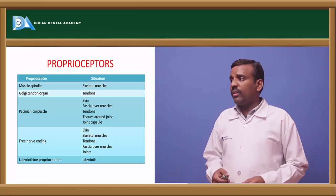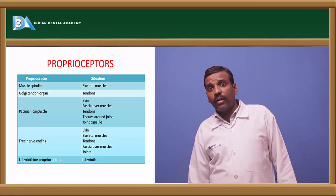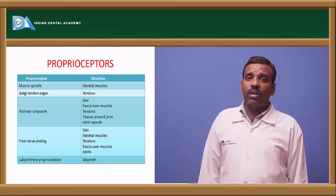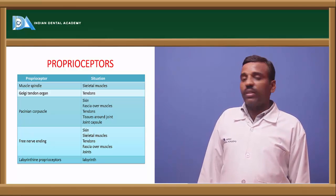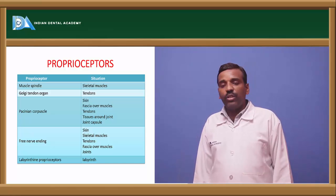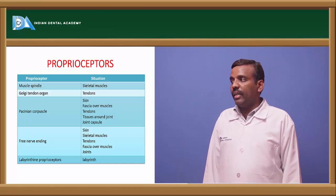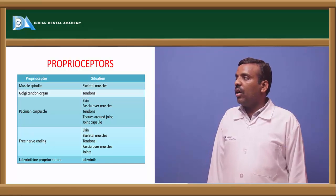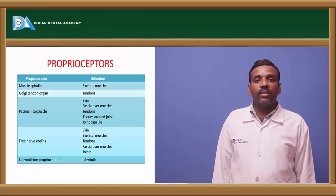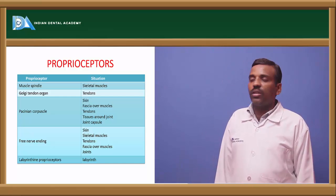Proprioceptors maintain proprioception, equilibrium, and posture — they are why we do not fall despite our position. They include muscle spindles, Golgi tendon organs, Pacinian corpuscles, free nerve endings, and the labyrinth. Muscle spindles are in skeletal muscle; Golgi tendon organs are in tendons; Pacinian corpuscles are in skin, fascia, tendons, tissue around joints, and joint capsules; free nerve endings are in skin, skeletal muscle, tendons, fascia, and joints; labyrinth proprioceptors are in the labyrinth.